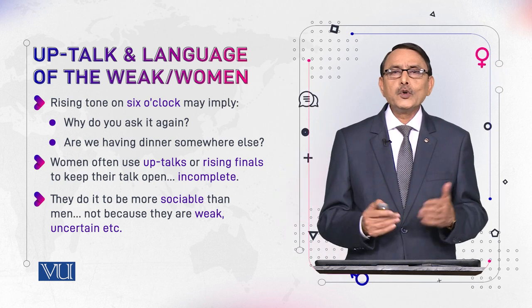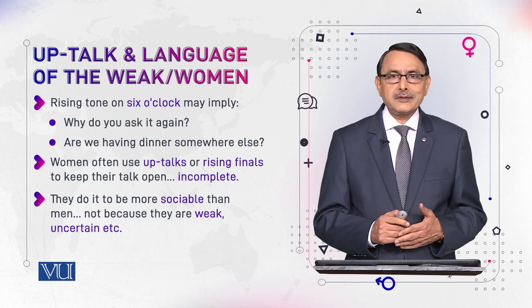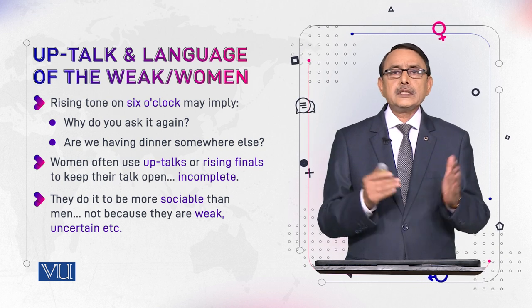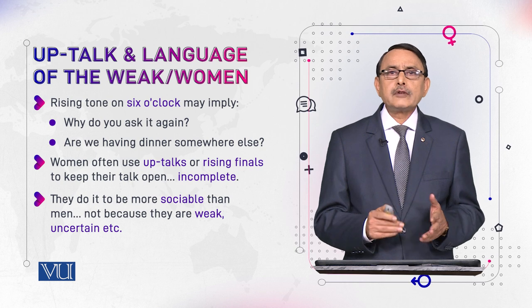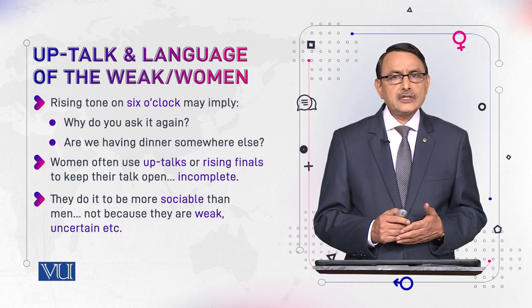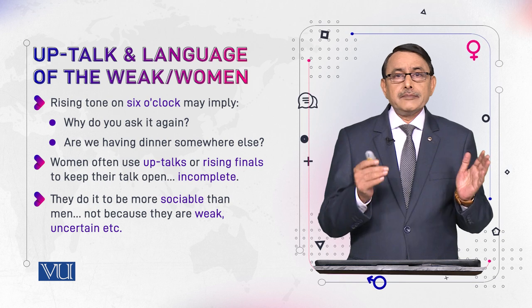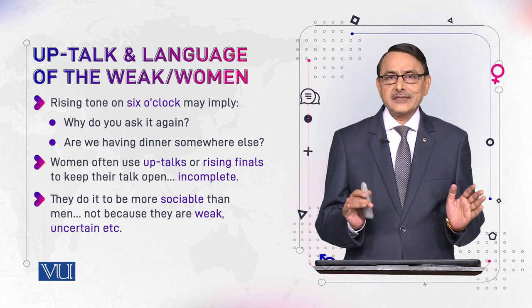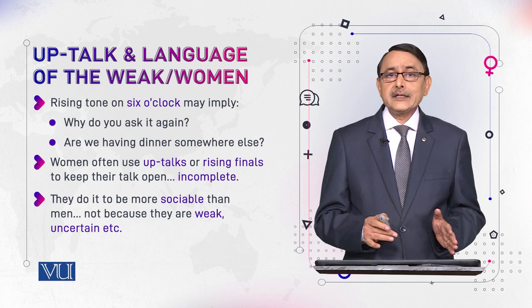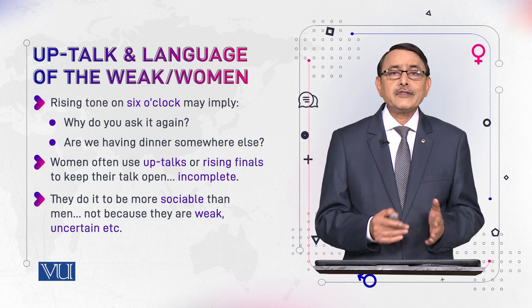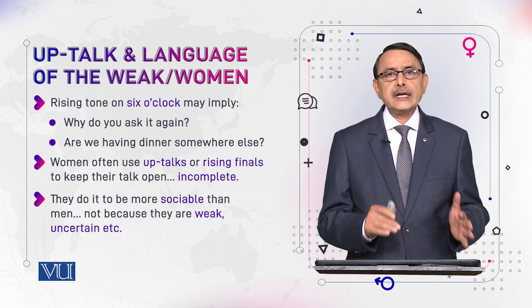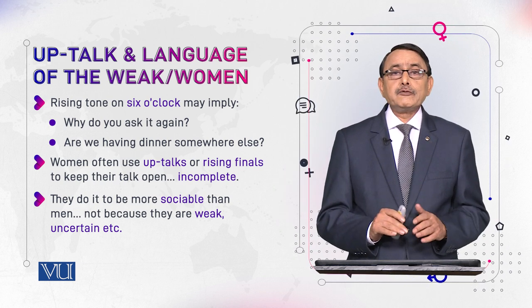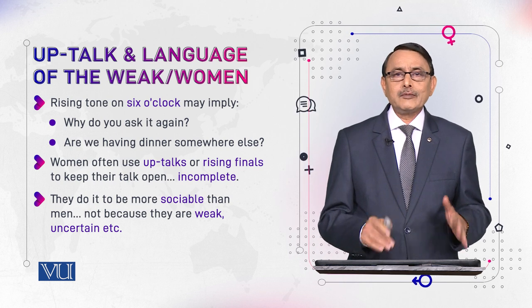A person who wants more talk is sociable; a person who avoids talk is withdrawn and goes for withdrawal from others' company. Women use uptalks to be more sociable than men — not because they are weak. It is not that uptalk makes their language weak or that women themselves are weak. Rather, they want to be sociable and talk more about something.